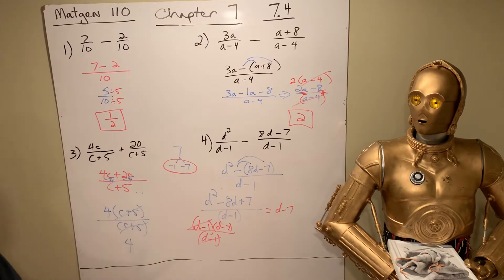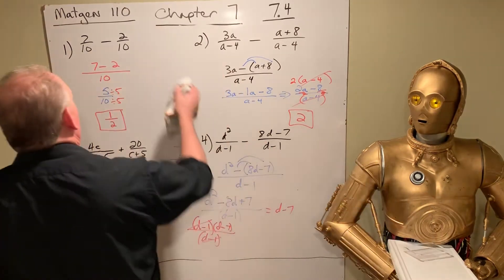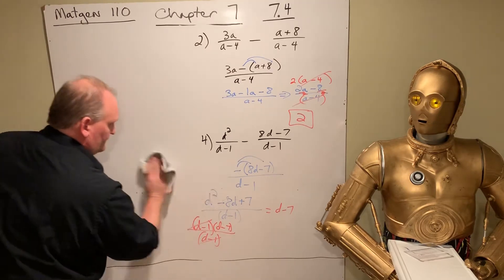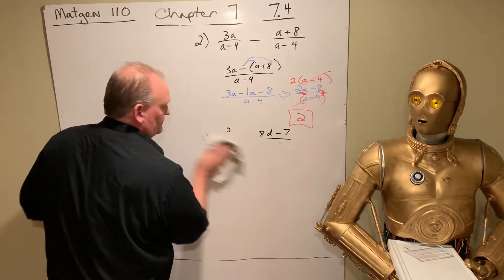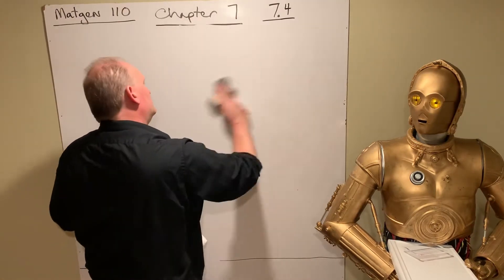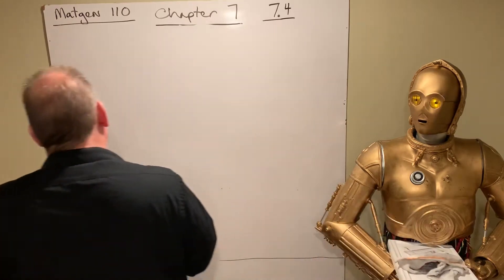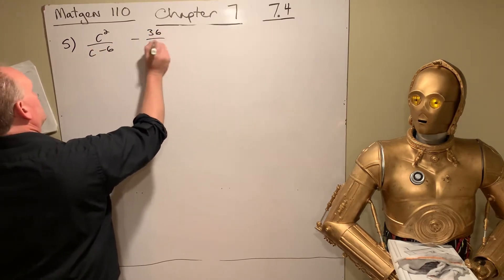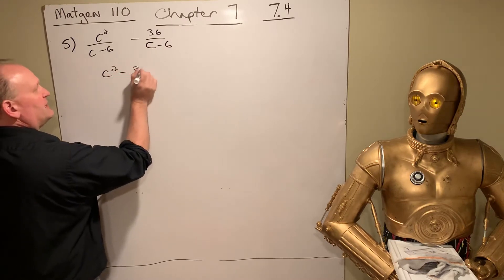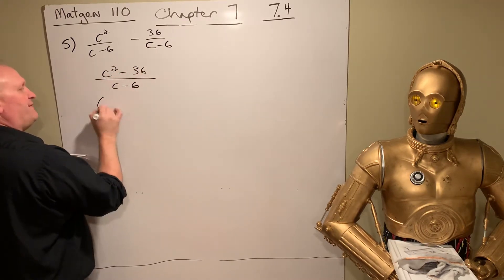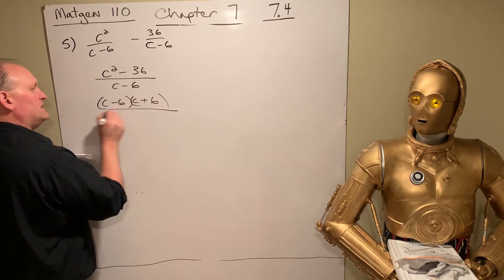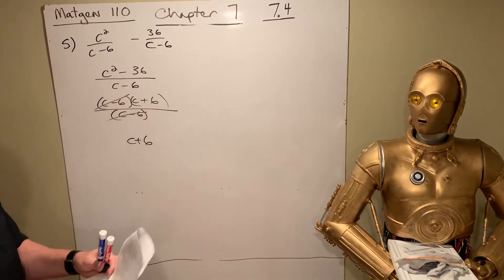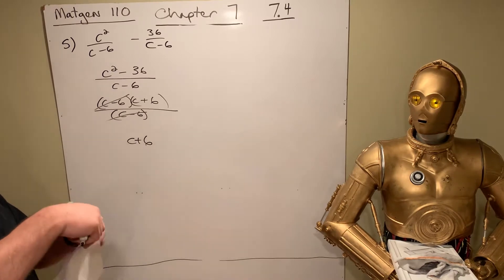Number 5 on that page looks like this. C squared over C minus 6, minus 36 over C minus 6. So on the top, we end up with C squared minus 36 over C minus 6. That factors C minus 6, C plus 6, all over C minus 6. And the C minus 6s cancel. And you're just left with C plus 6.